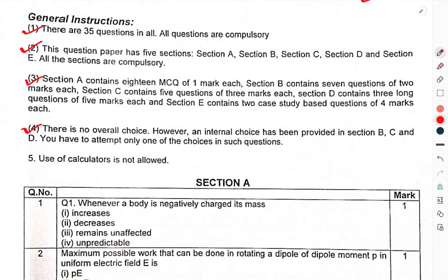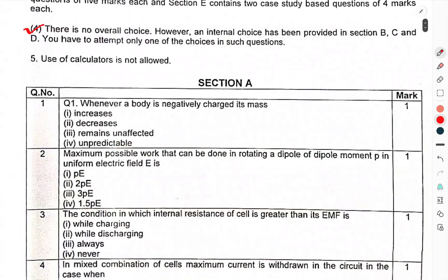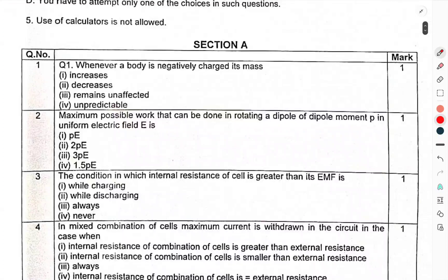There is no overall choice, however internal choice has been provided in section B, C and D. You have to attempt only one of the choices in such questions. Use of calculators is not allowed. Now we have come to section A.